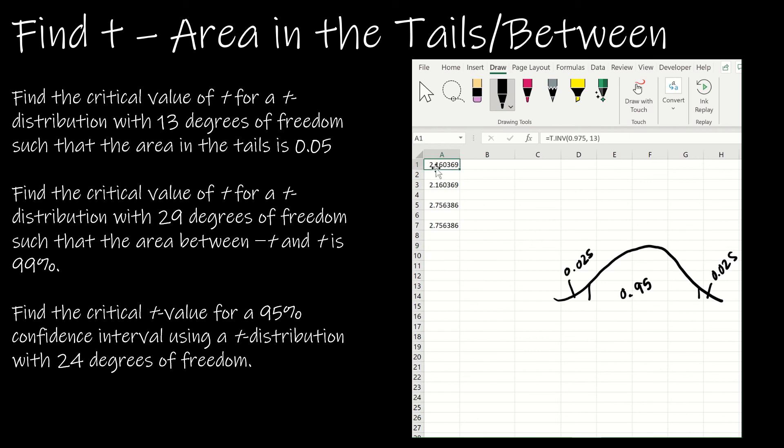It's really similar to what I did up here. I did t inverse of 0.975, so I'm just going to change this to 24 degrees of freedom. Or t inverse 2 tailed: if there's 95% in the interval, there's 5% left on the outside, and again, 24 degrees of freedom. That would be my solution for the last one.